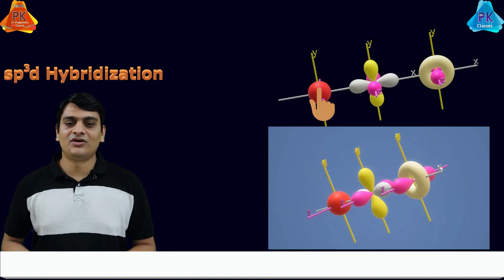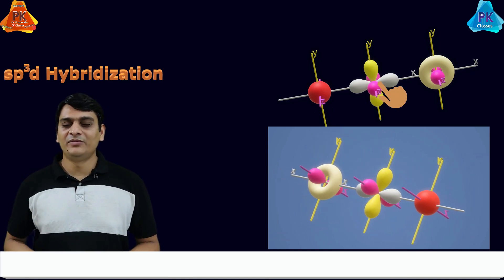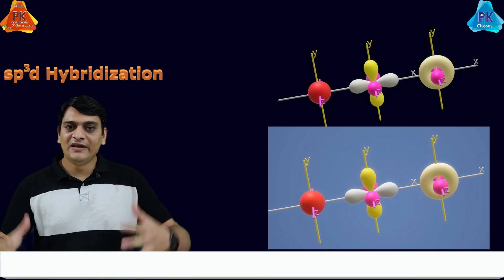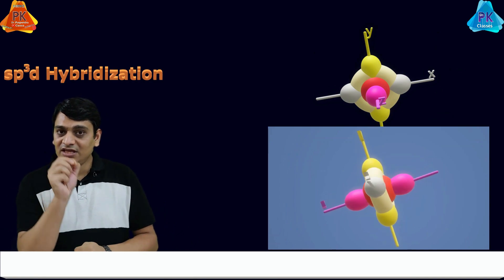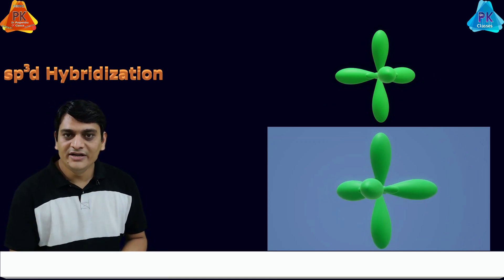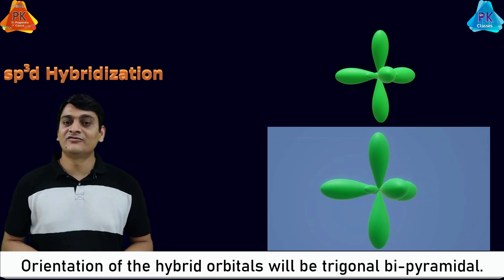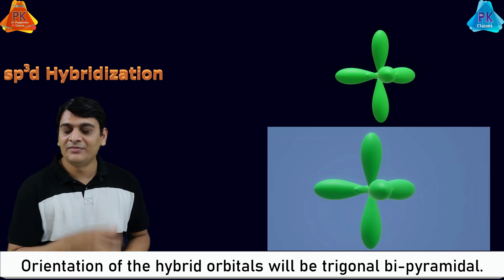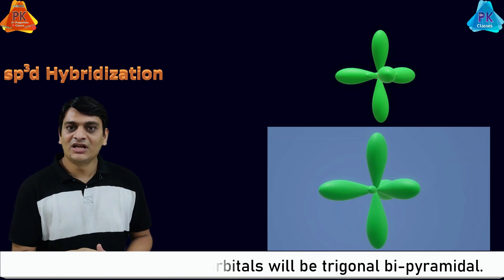Now let's understand sp3d hybridization with a 3D representation. One s orbital, three p orbitals, and one d orbital are all mixed together to form hybrid orbitals. The orientation of these hybrid orbitals is trigonal bipyramidal.